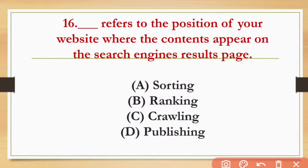This refers to the position of your website where the content appears on the search engine result page. The options are Stalking, Ranking, Crawling, and Publishing. The answer is Ranking.